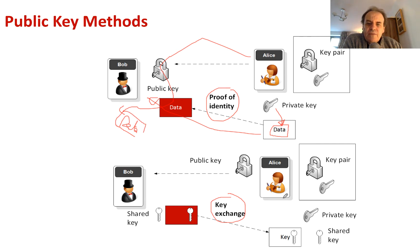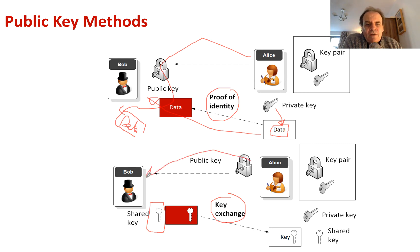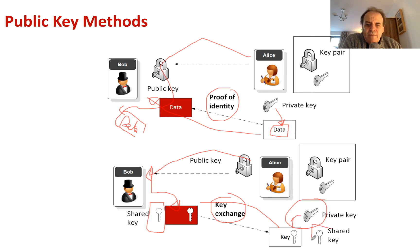Public key is also used for key exchange. In this case, Bob has a shared key and Alice wants the same shared key. Alice sends over her public key. Bob then encrypts the shared symmetric key with her public key and sends it back. Alice then takes her private key, decrypts it, and both Bob and Alice will have the same key.